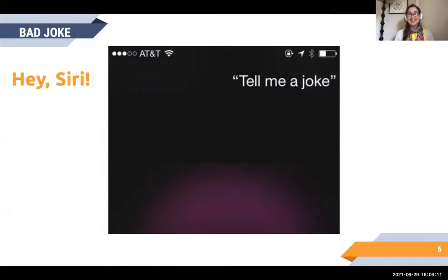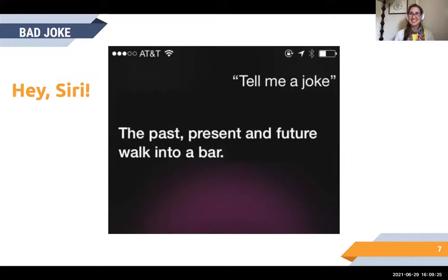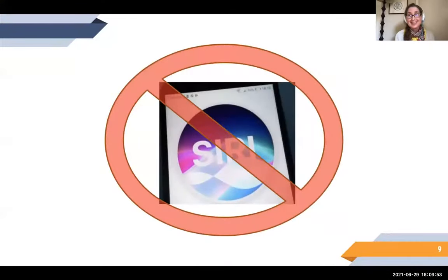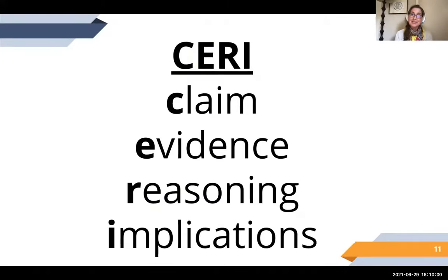Let's talk about what CERI is. I'll start with a bad joke — hey Siri, tell me a joke. Siri says: the past, present, and future walk into a bar, and it was tense. We're not talking about that CERI. This CERI stands for Claim, Evidence, Reasoning, and Implications. These are the major parts of a scientific argument, and every scientific paper hopefully contains all the parts of an argument. If they don't have these parts, then there's a flaw.